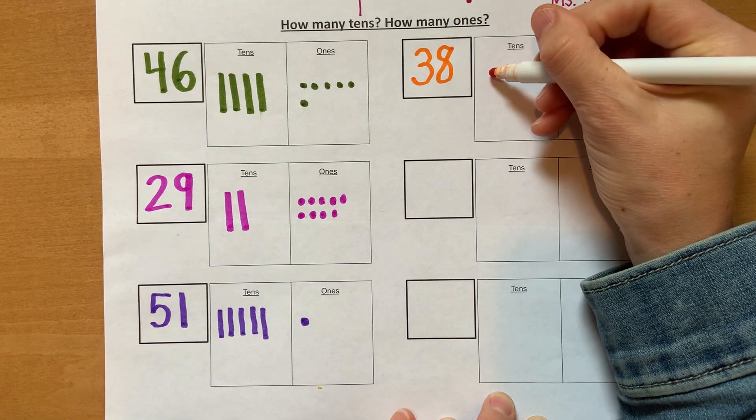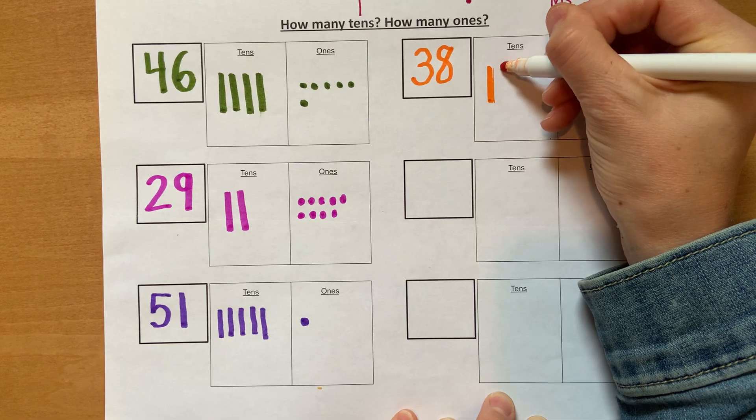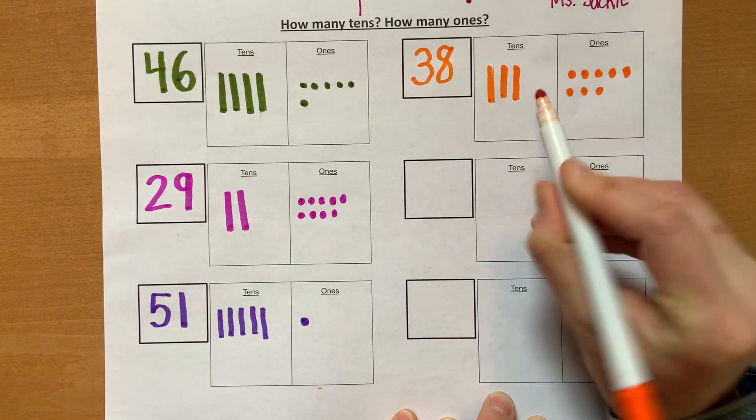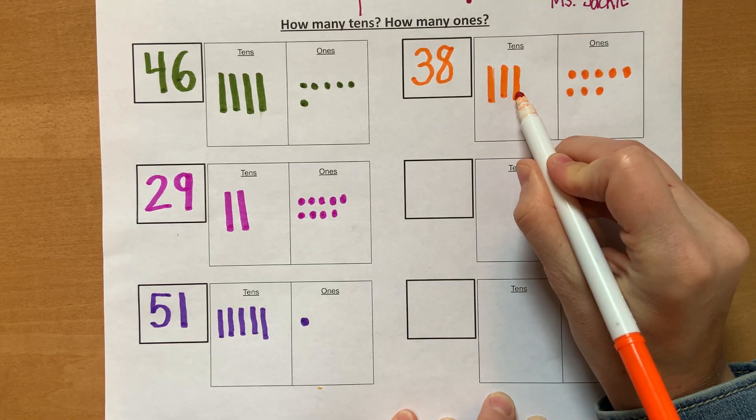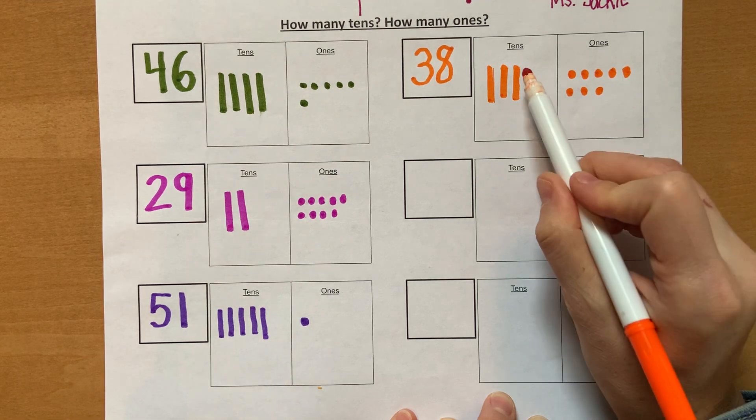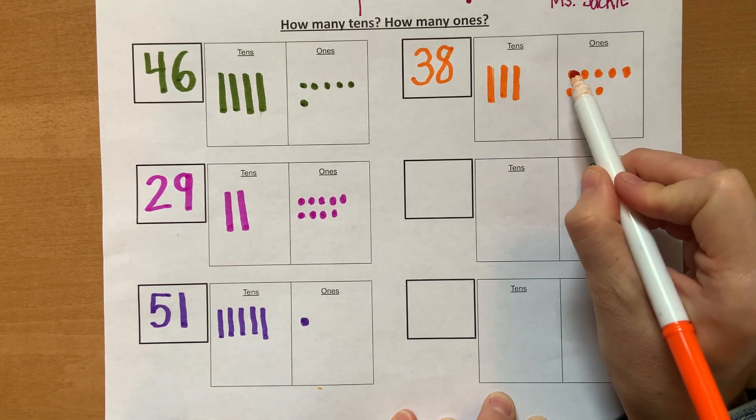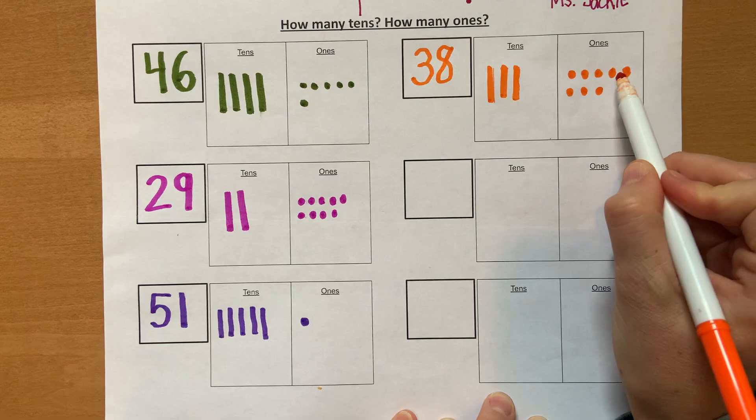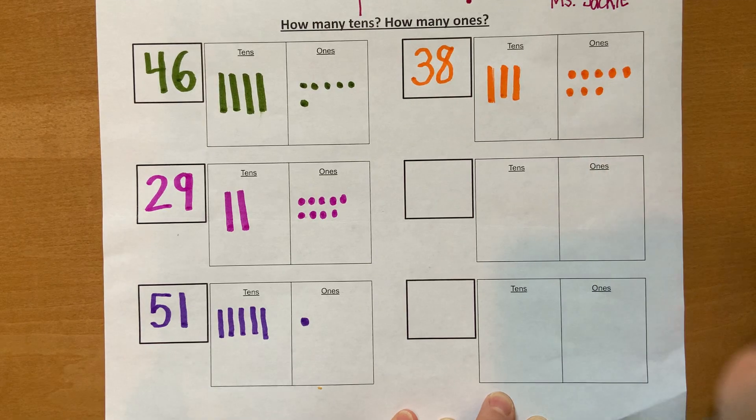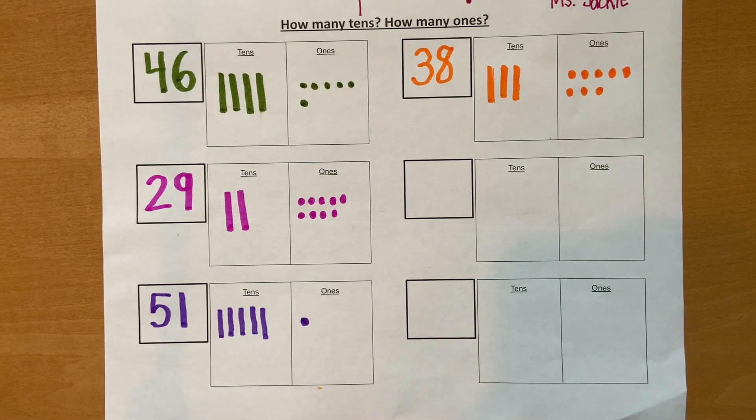And now I need how many 10s? I need 3. So 1, 2, 3 makes 10, 20, 30. All right, now I have 30, 31, 32, 33, 34, 35, 36, 37, 38. Got the number 38. I hope yours looks like that too. It's okay if not, but try again.